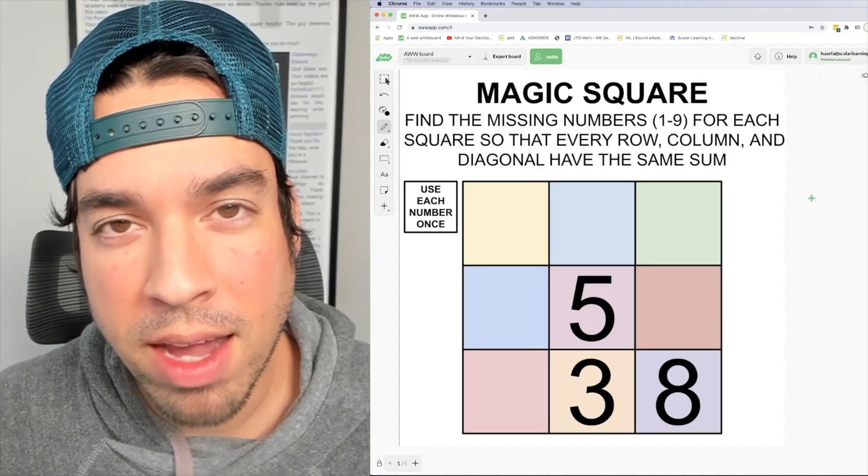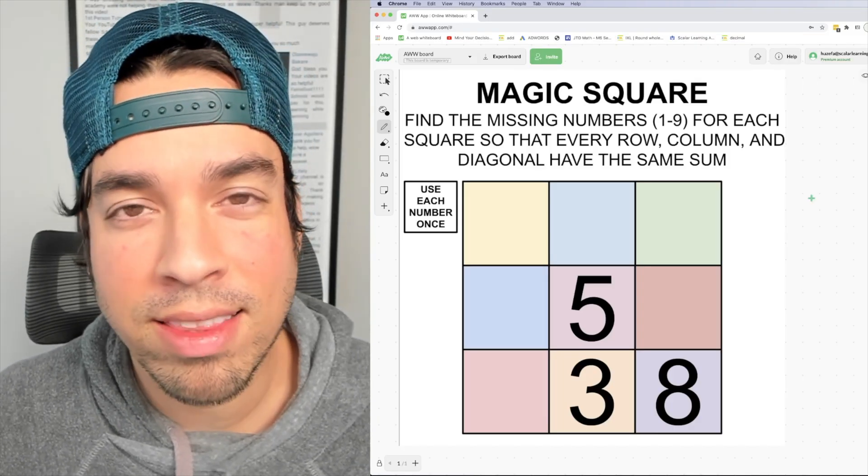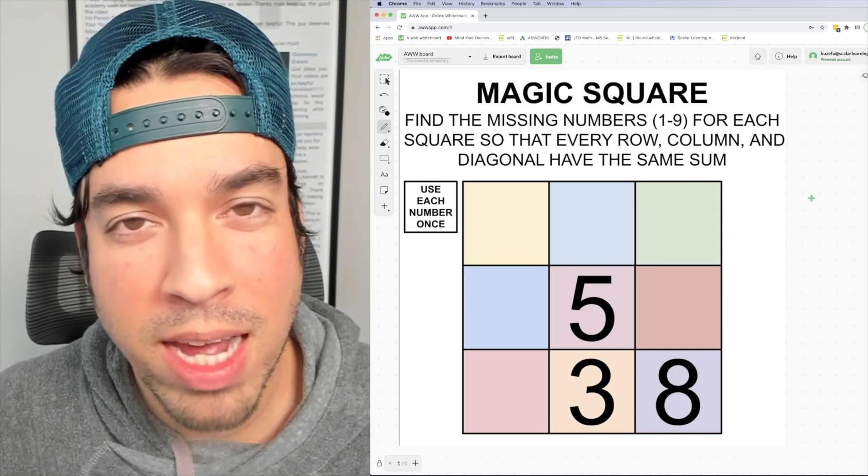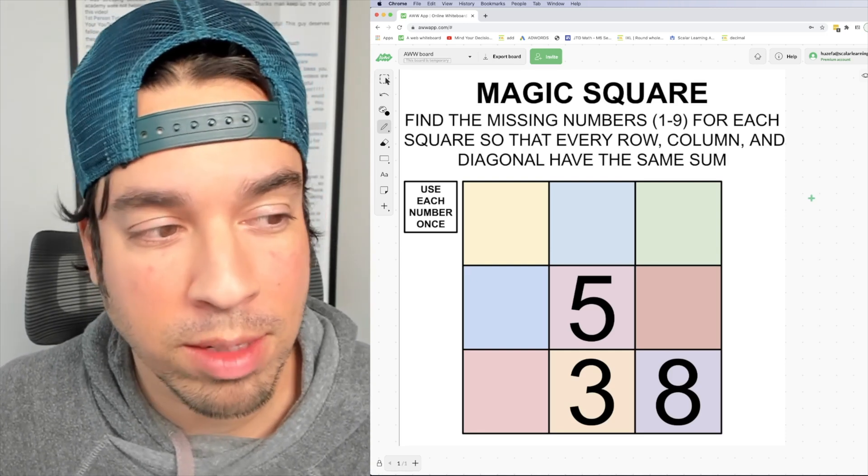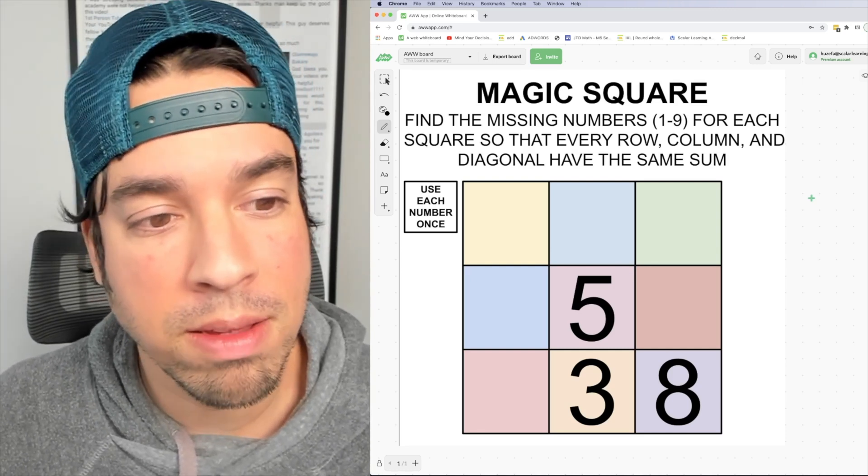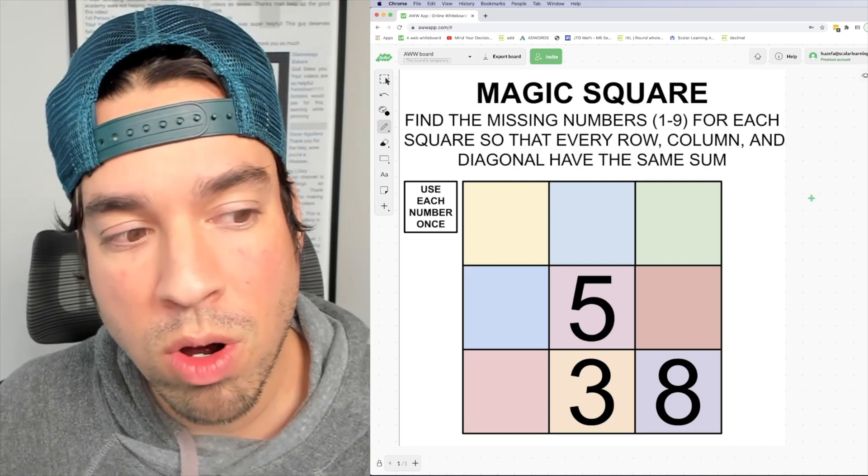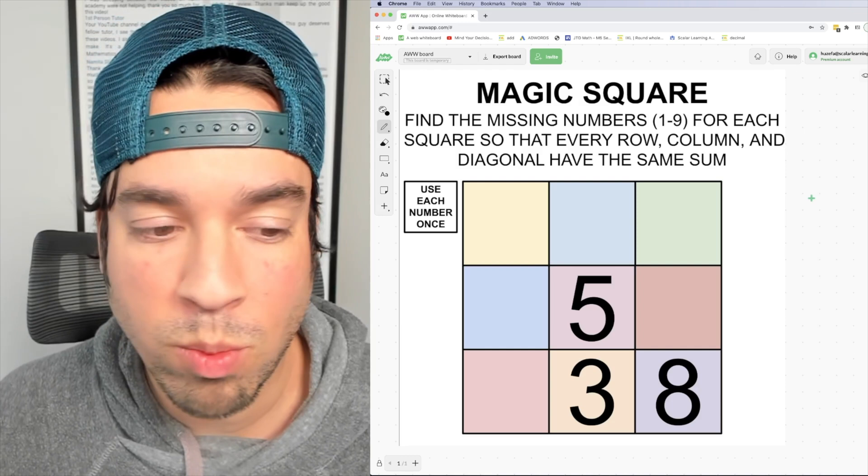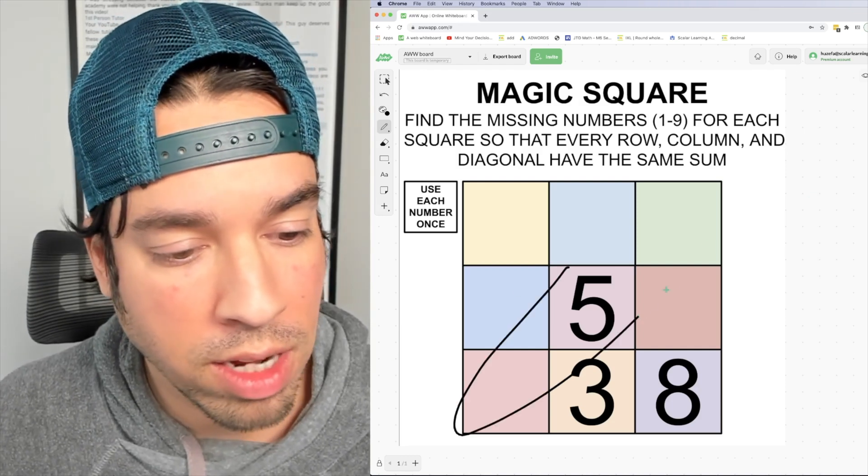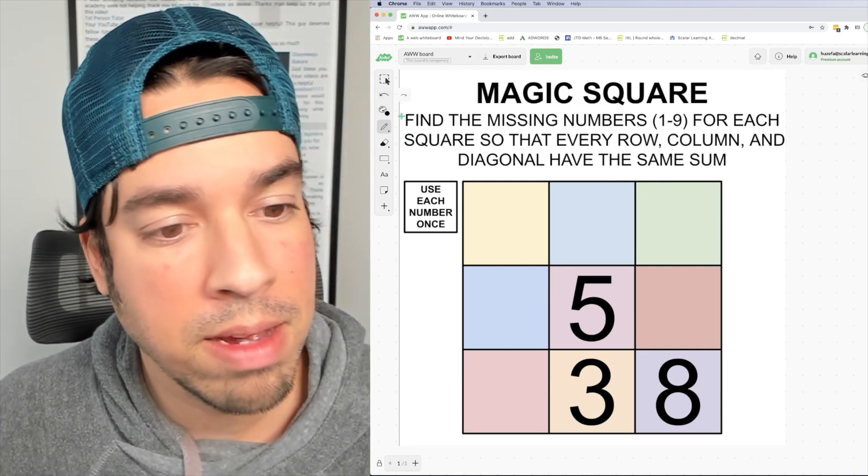What's up everybody and welcome back to another math puzzle. In this one we are back to magic squares and I love magic squares. The objective here is to find the missing numbers one through nine for each square so that every row, column, and diagonal, by diagonal I mean the long diagonal, have the same sum.